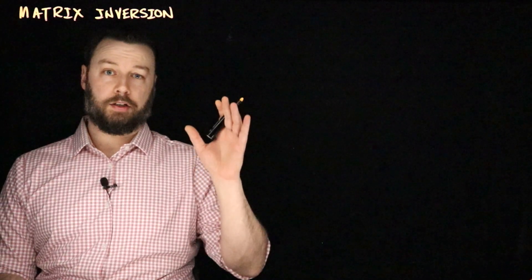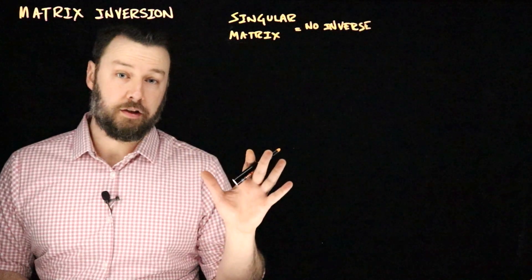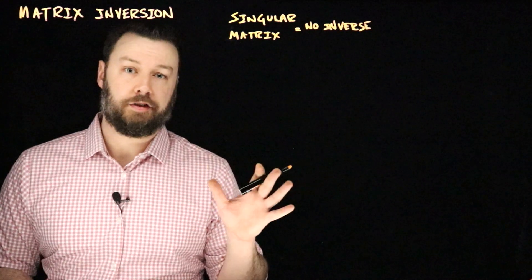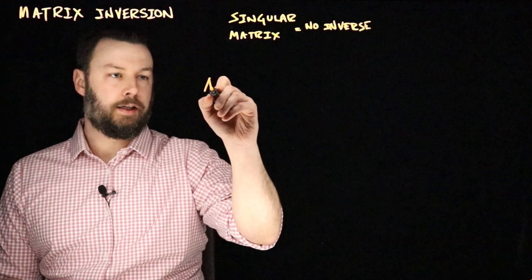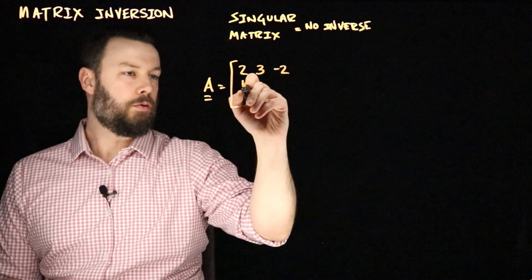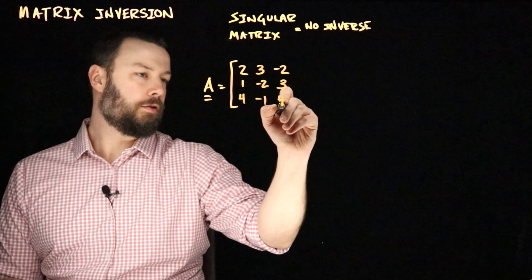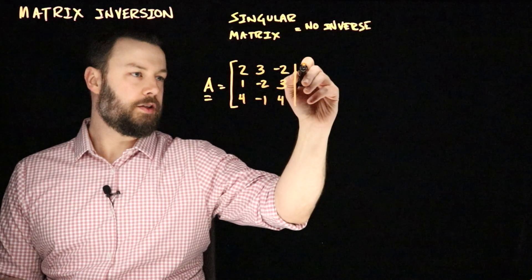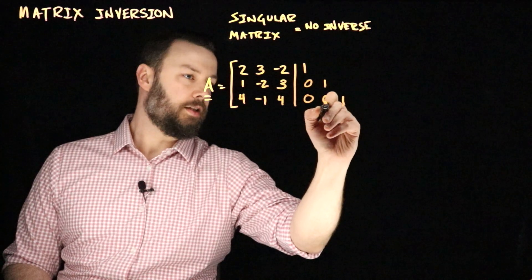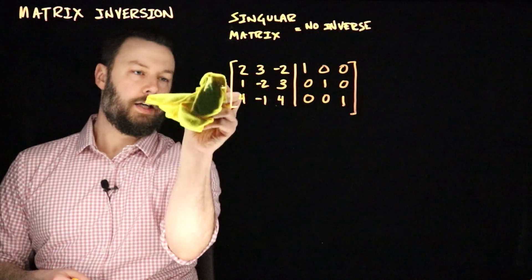Now sometimes a matrix doesn't have an inverse. When we talk about a square matrix that has no inverse, we call that a singular matrix. Let's do Gaussian elimination for a singular matrix just to see what that looks like.